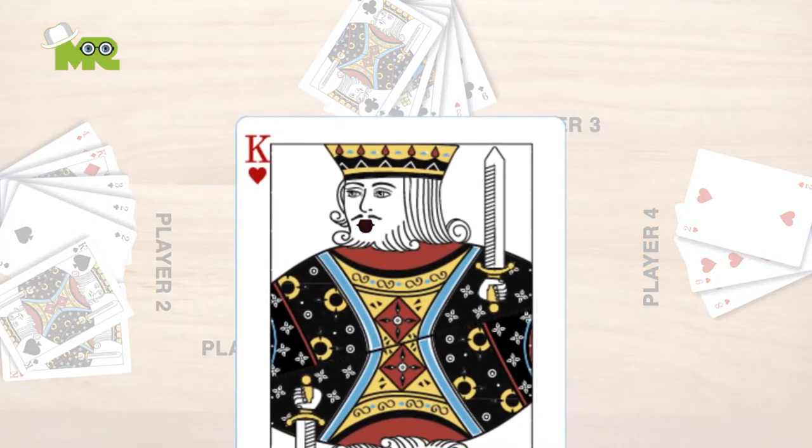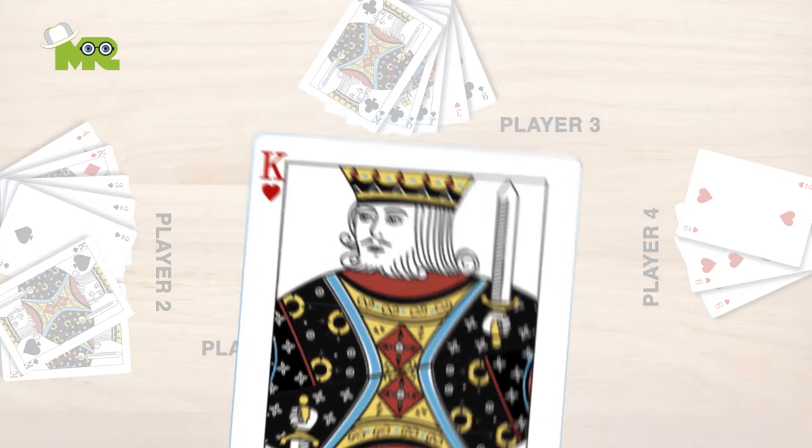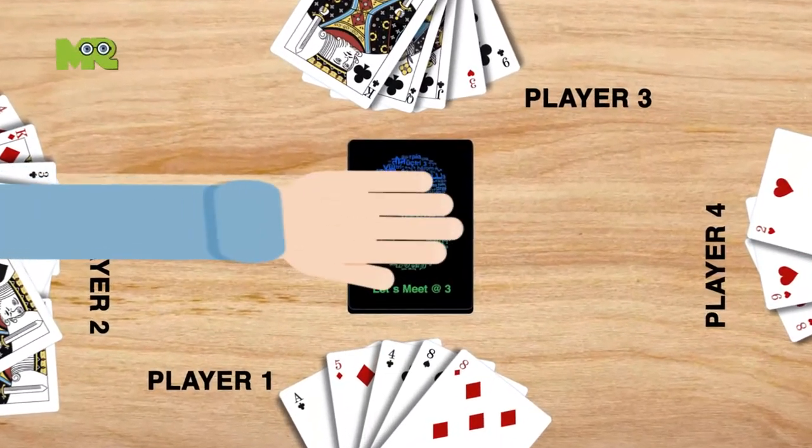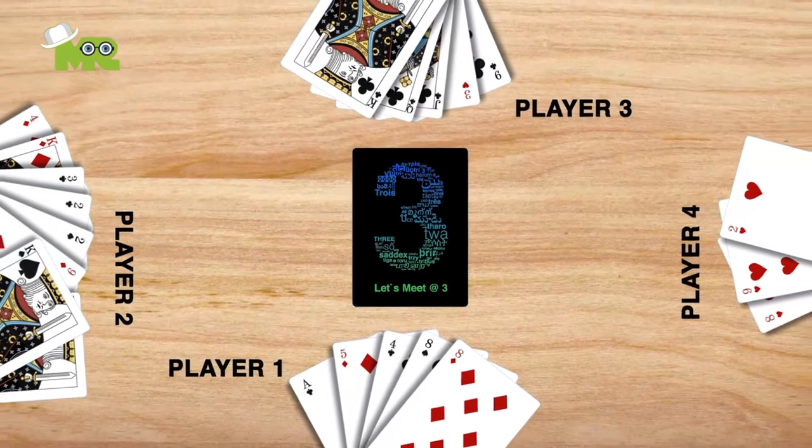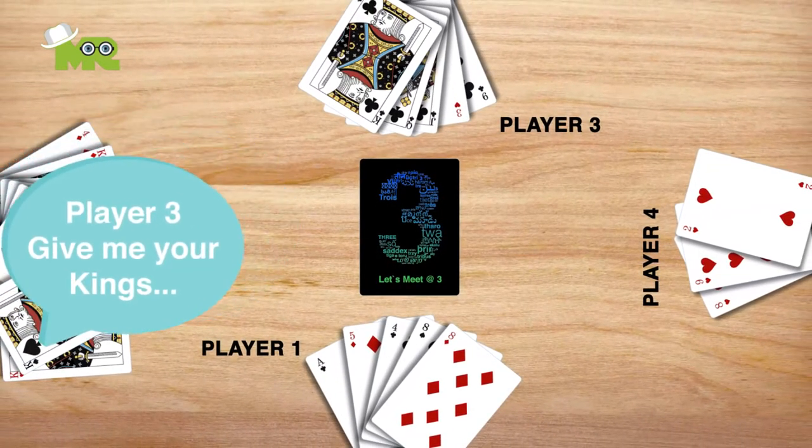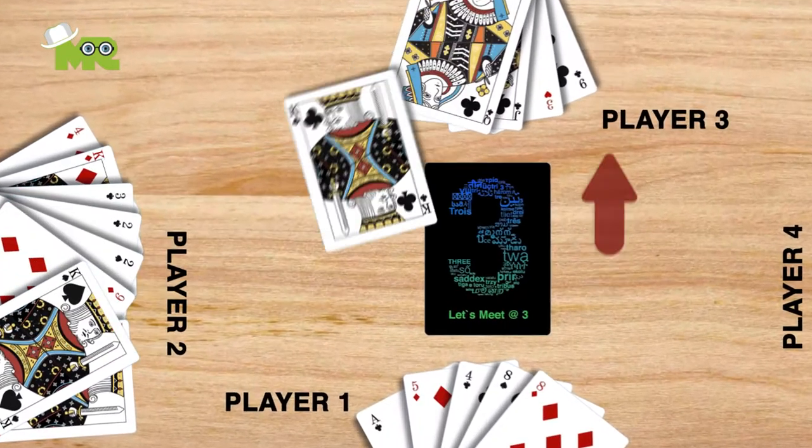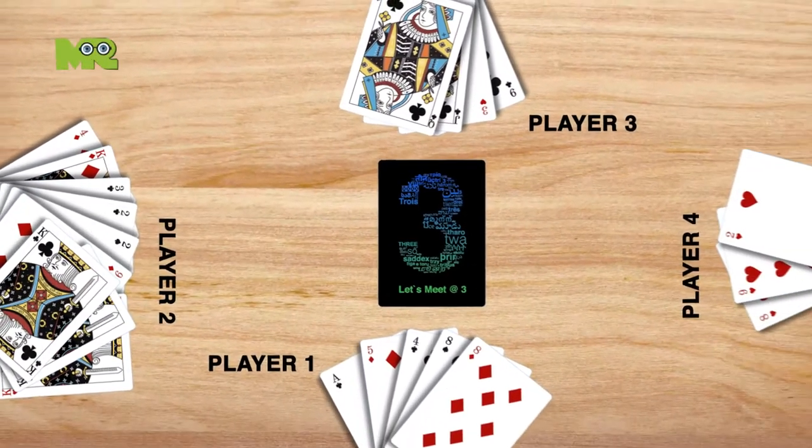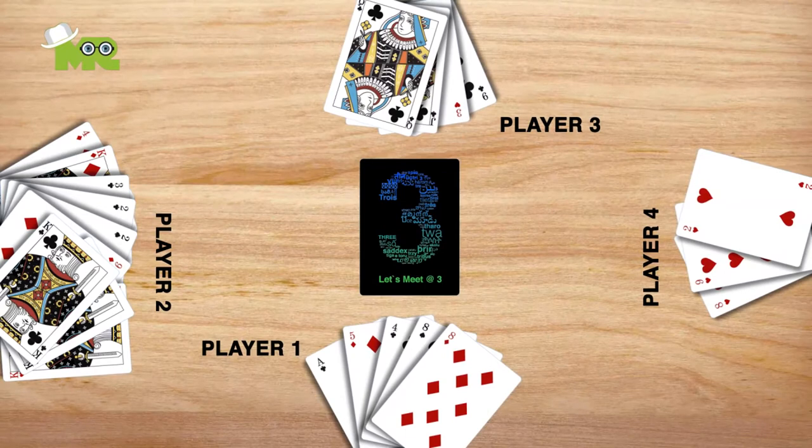In case the player who is addressed doesn't have the card, they say go fish, and the player who made the request draws the top card from the stock and places it in their hand. The player gets the opportunity to ask the same or another player for a card if they get one or more cards from the named rank that they asked for.